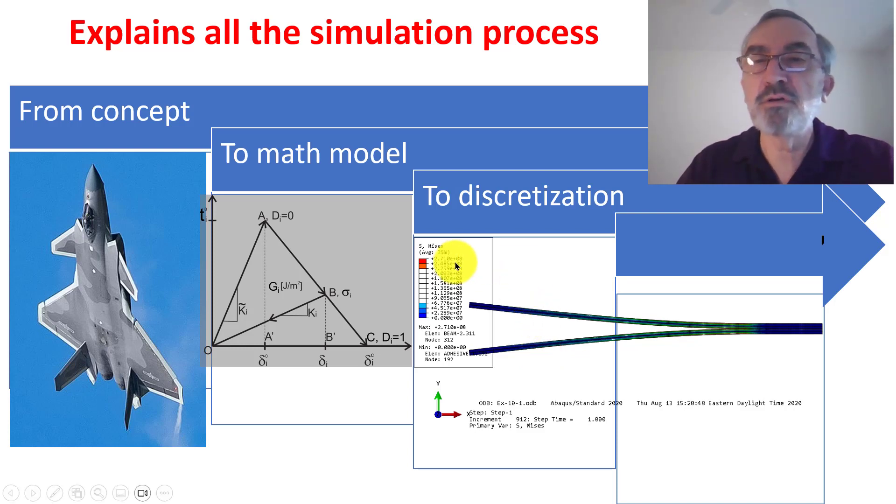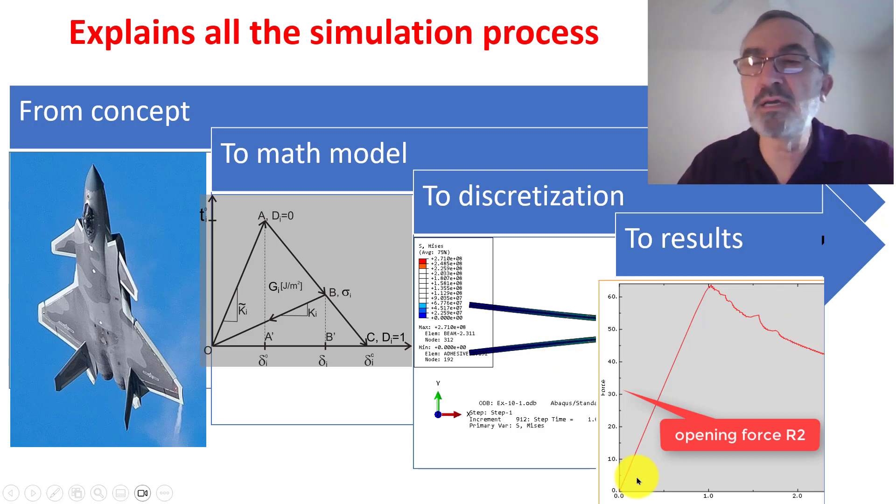And once you have the discretization, which in this case is done with Abacus, then you solve it. And once you solve it, then you have results. Now you look at the results, opening forces versus opening displacement, let's say. And then you go here and you say this result. And if the result is okay, it meets the design criteria, then you're done. Otherwise, you have to modify the design. That is the process. And this entire process is explained in this textbook.